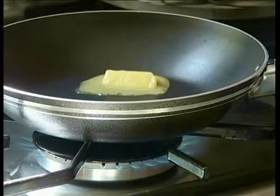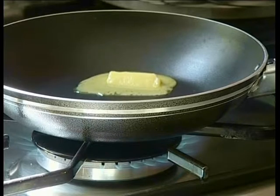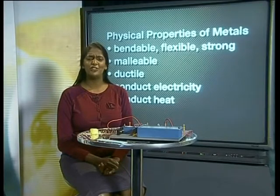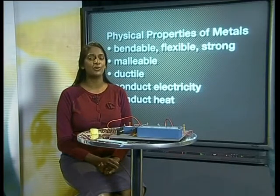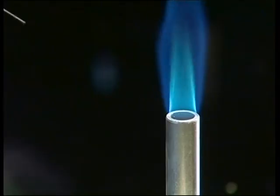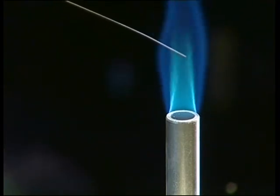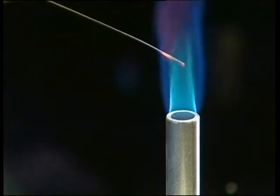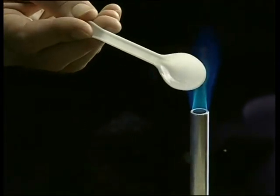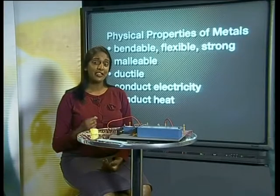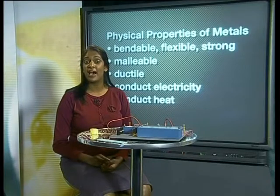Metals also conduct heat well. We say that they are good thermal conductors. That is why pots and pans are made of metal — just look at how quickly the butter melts as soon as heat is applied to the pan. Now observe what happens if we place this metal strip in the hottest part of the flame of a Bunsen burner. You can see that the metal starts to glow a little, but retains its shape. If we repeat this experiment with a plastic spoon, the plastic starts to melt almost immediately and loses its shape. From these results, we can conclude that this metal has a much higher melting point than plastic.